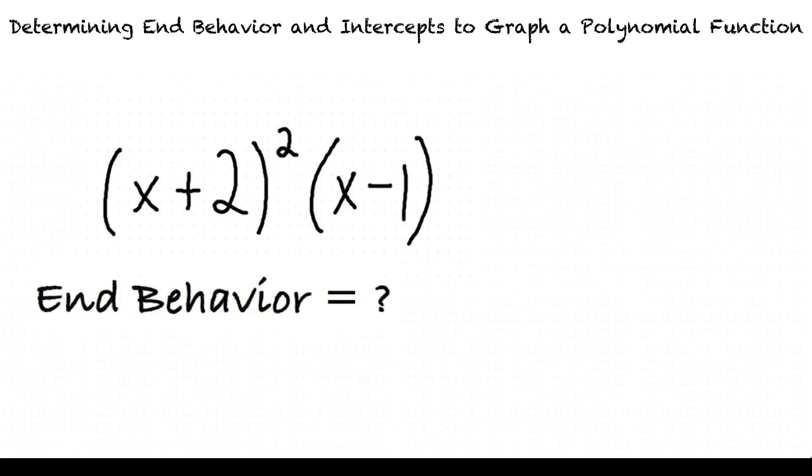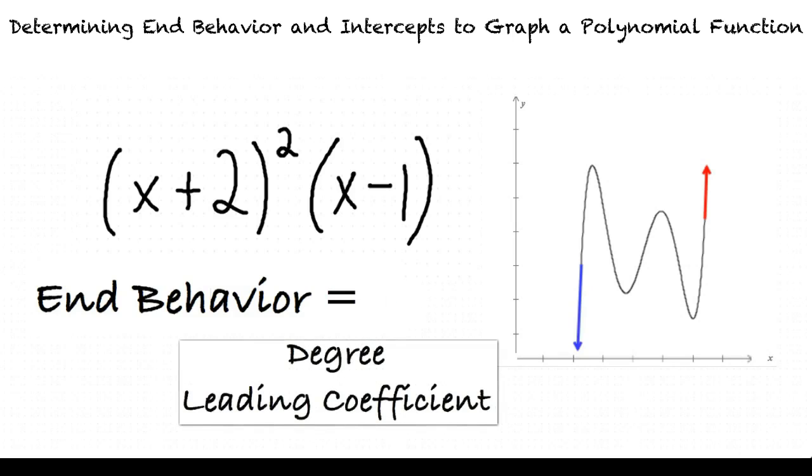What does the end behavior of a function mean? The end behavior of a function is the general appearance of the function when graphed. This is determined by finding both the term of highest degree and its leading coefficient.